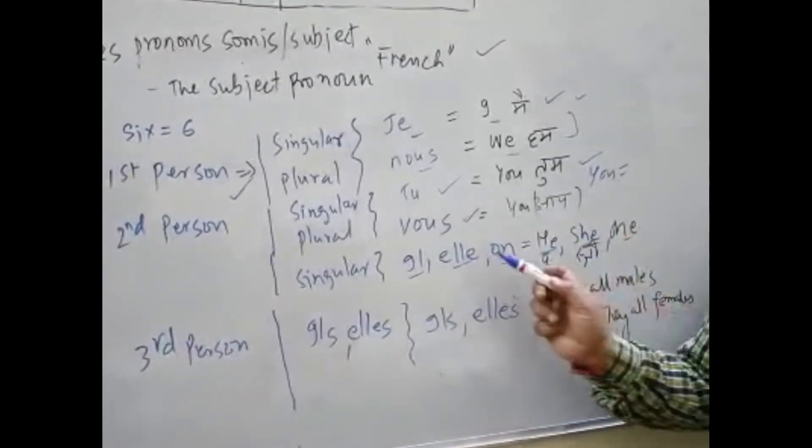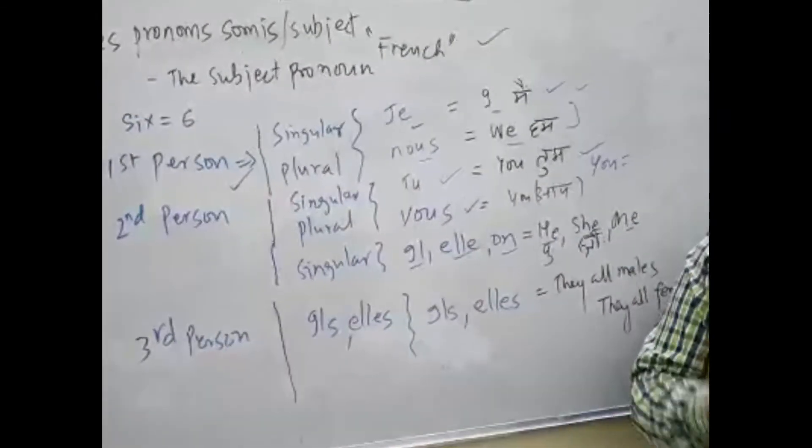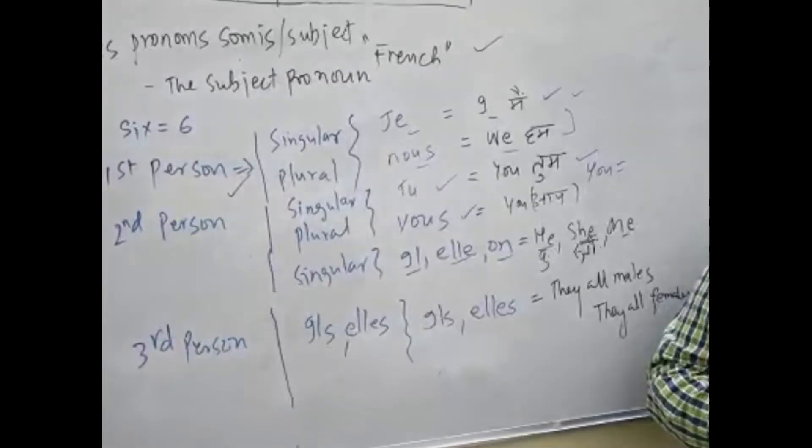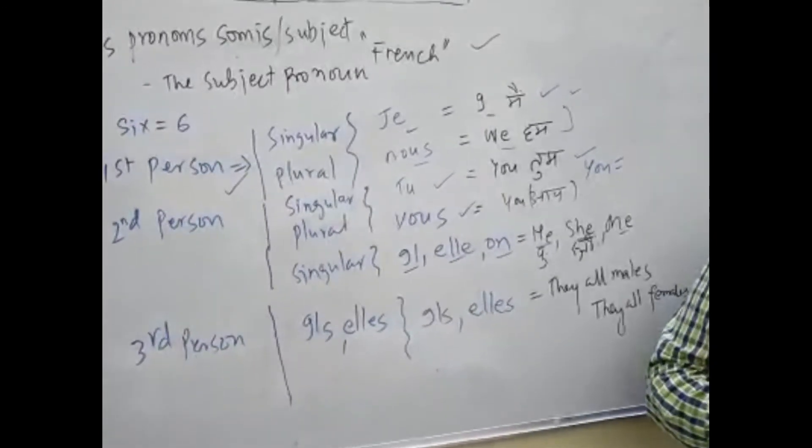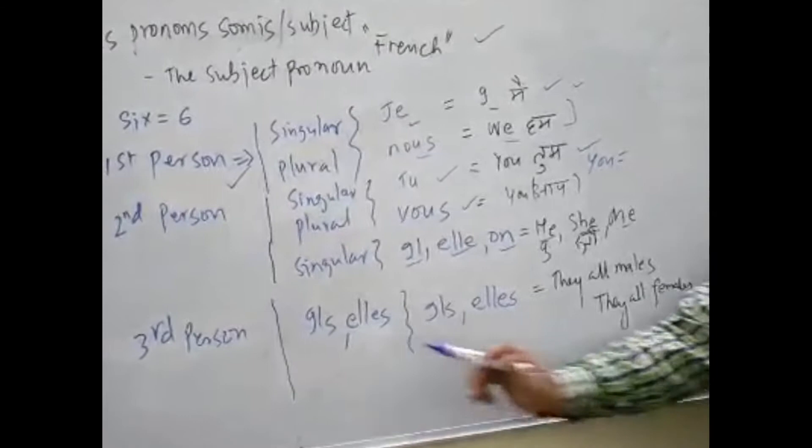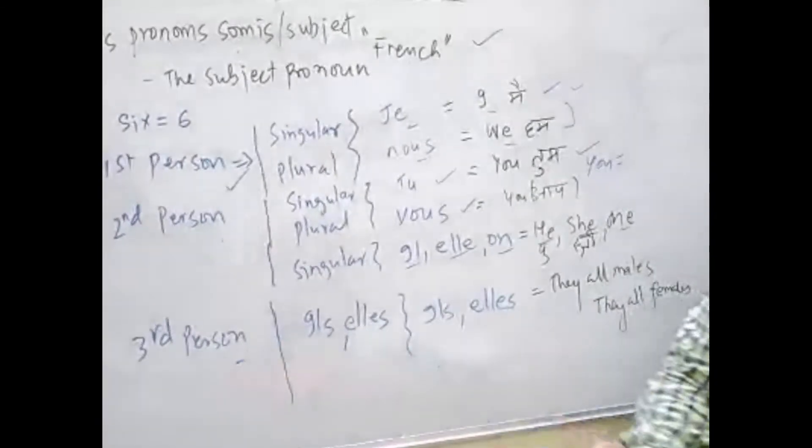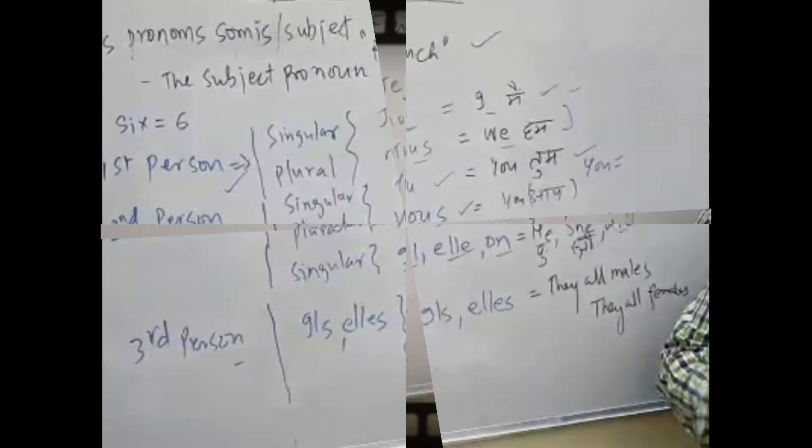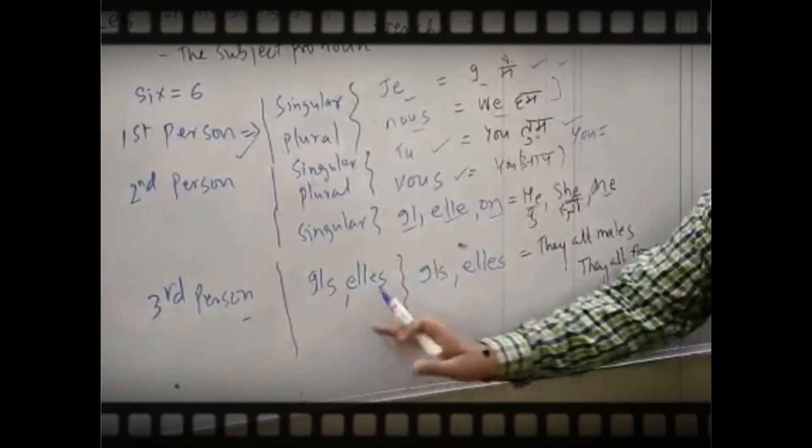Third person: il he, elle she, on one. That meant for a person male singular he, il. A person female singular she, elle. Or one who is maybe a lady or maybe a gentleman, called on, that is one.